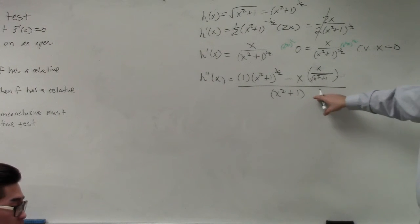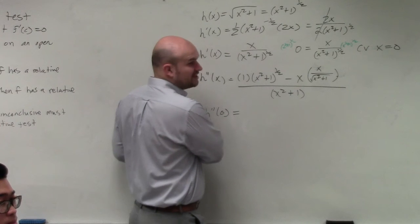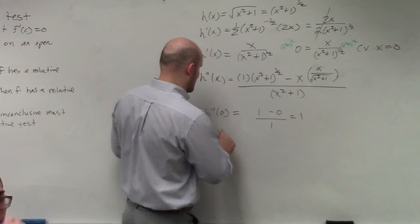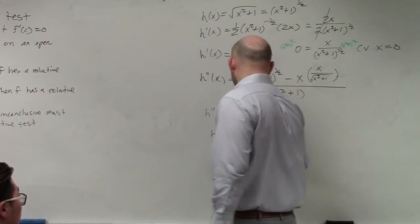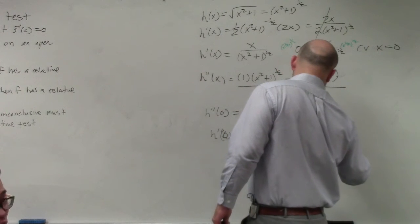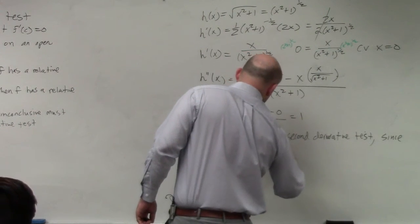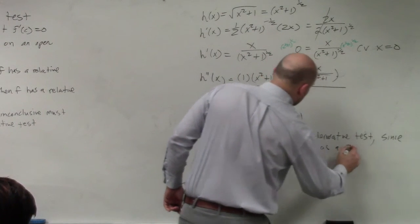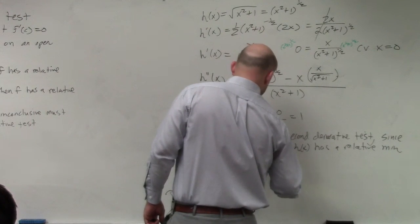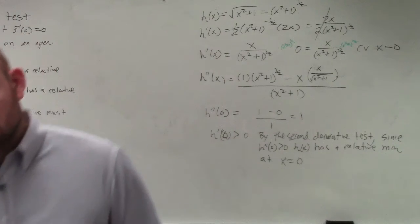now all we need to do is go ahead and find h''(0). And so basically, you're plugging in 0 into each and every one of these. And when I plug that in there, I get 1 minus 0 over 1, which equals 1. So therefore, I can say h''(0) is greater than 0. So by the second derivative test, since h''(0) is greater than 0, h(x) has a relative minimum at x equals 0.